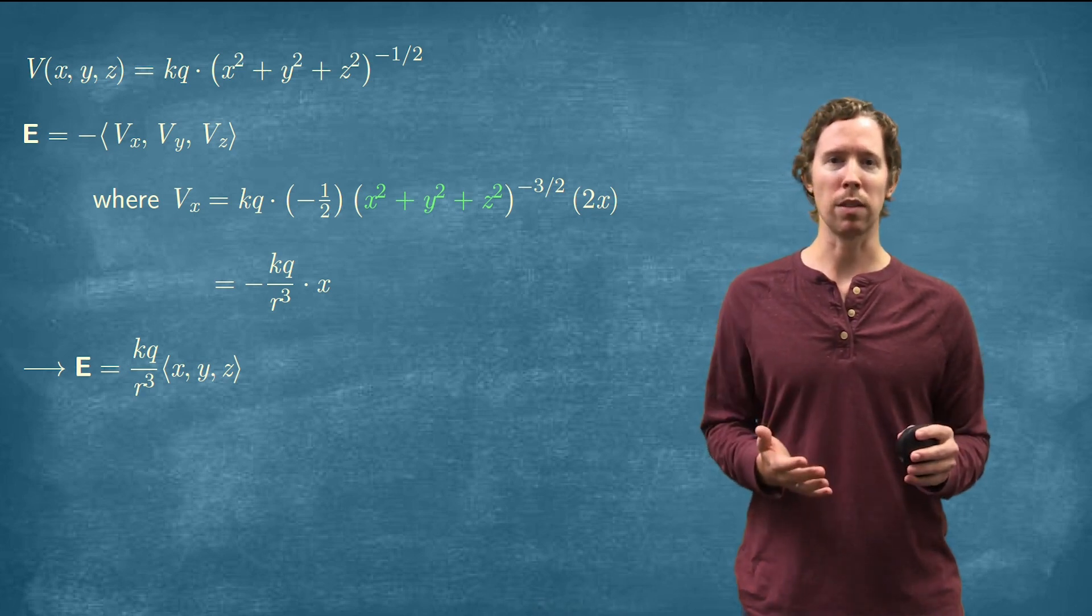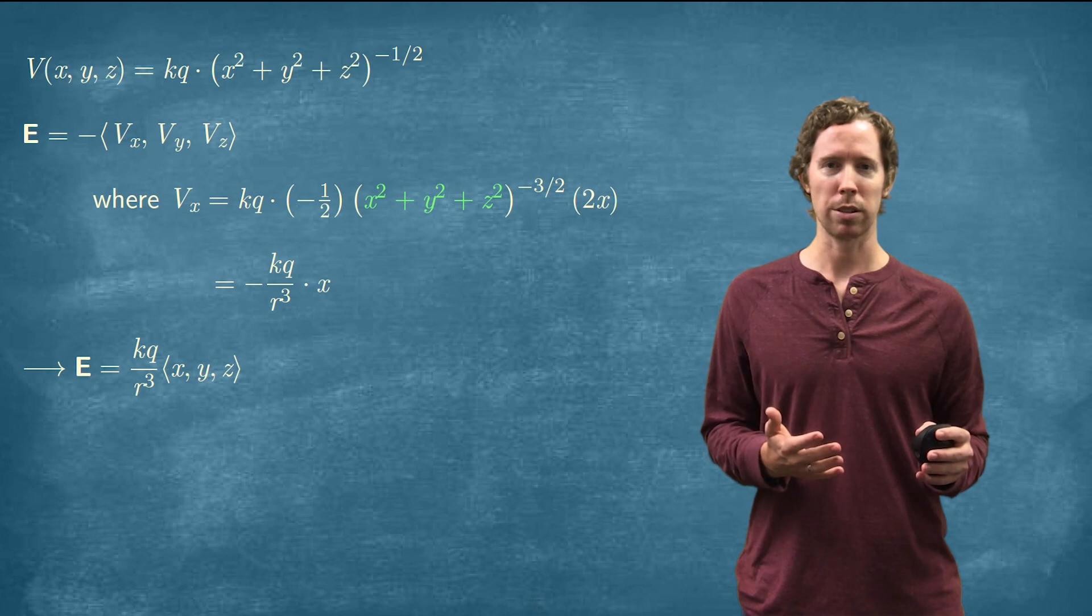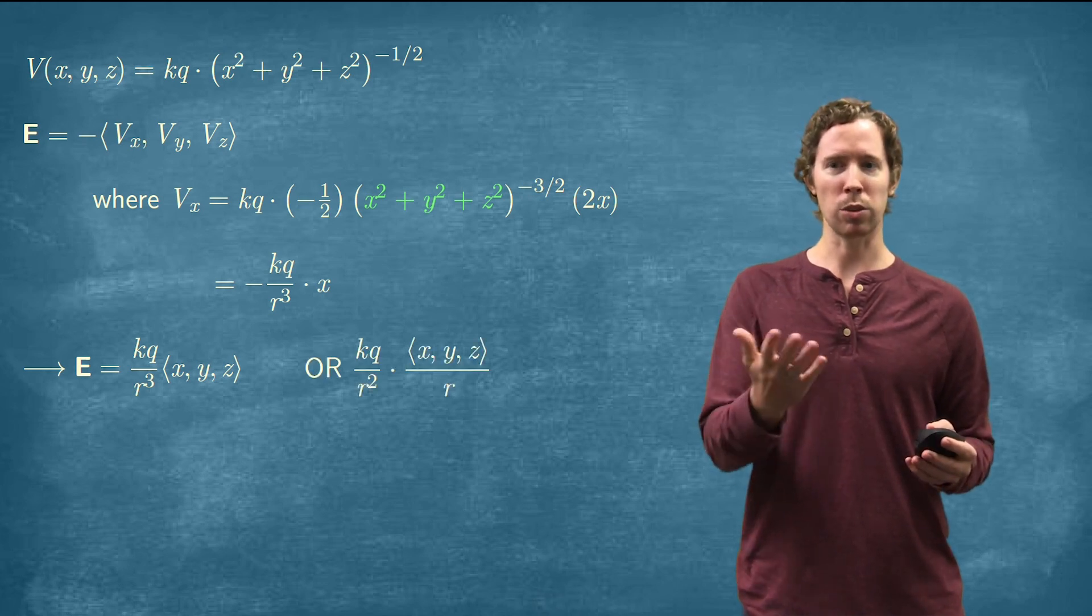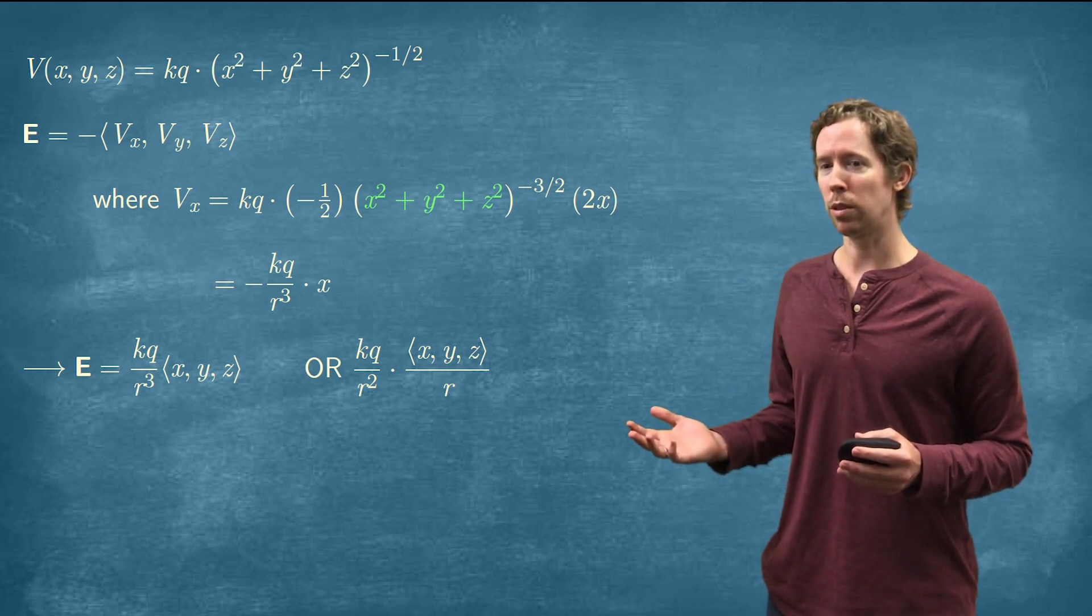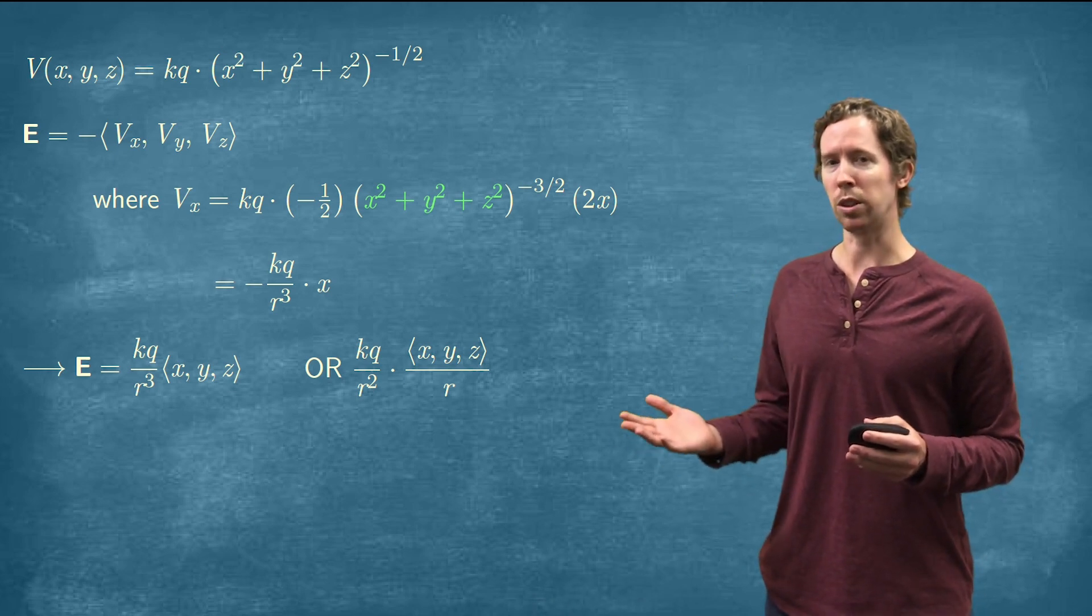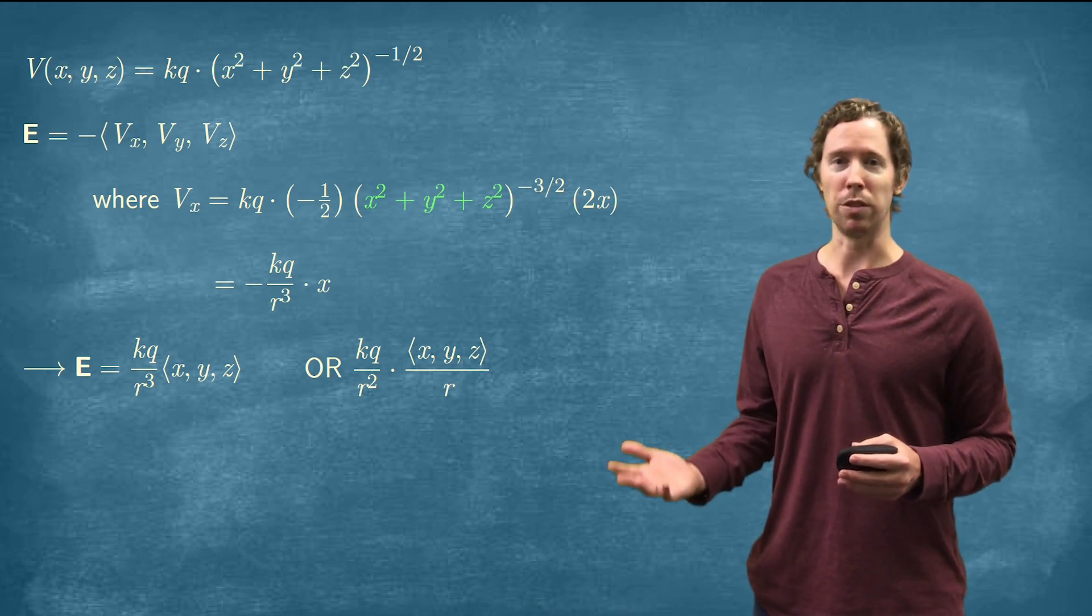X, Y, Z over the length of X, Y, Z is a unit vector. The length of X, Y, Z is R. So we can just rewrite it like this. You've got KQ over R squared times the unit vector in that direction. That is the electric field.